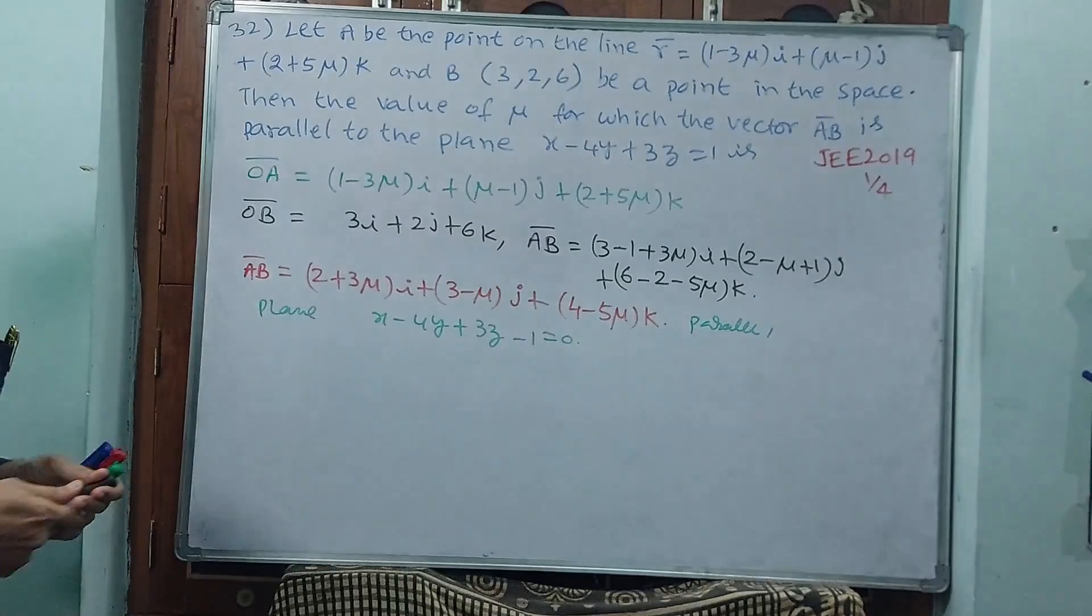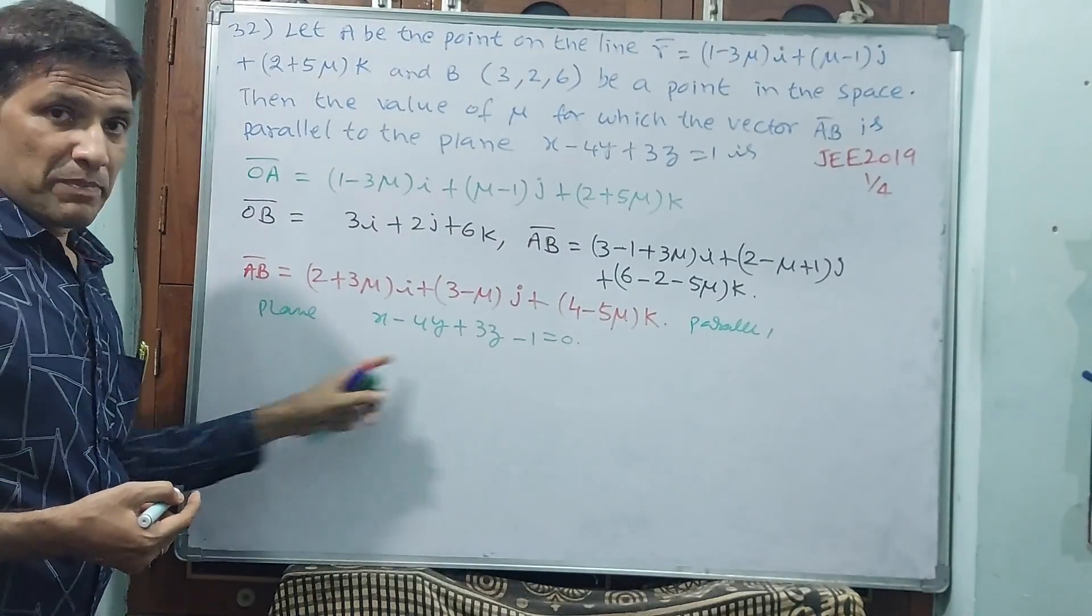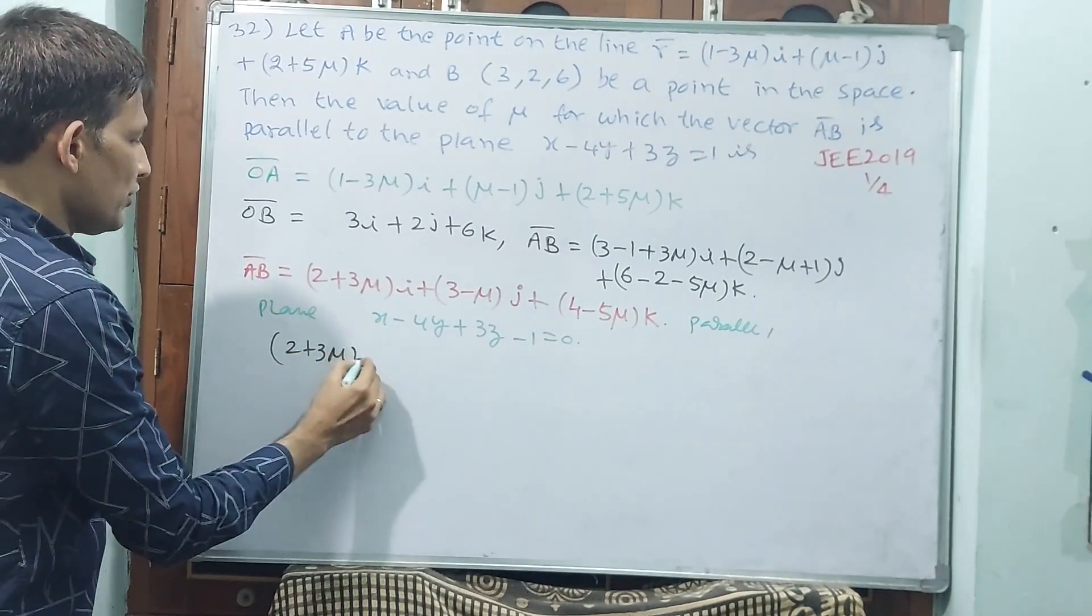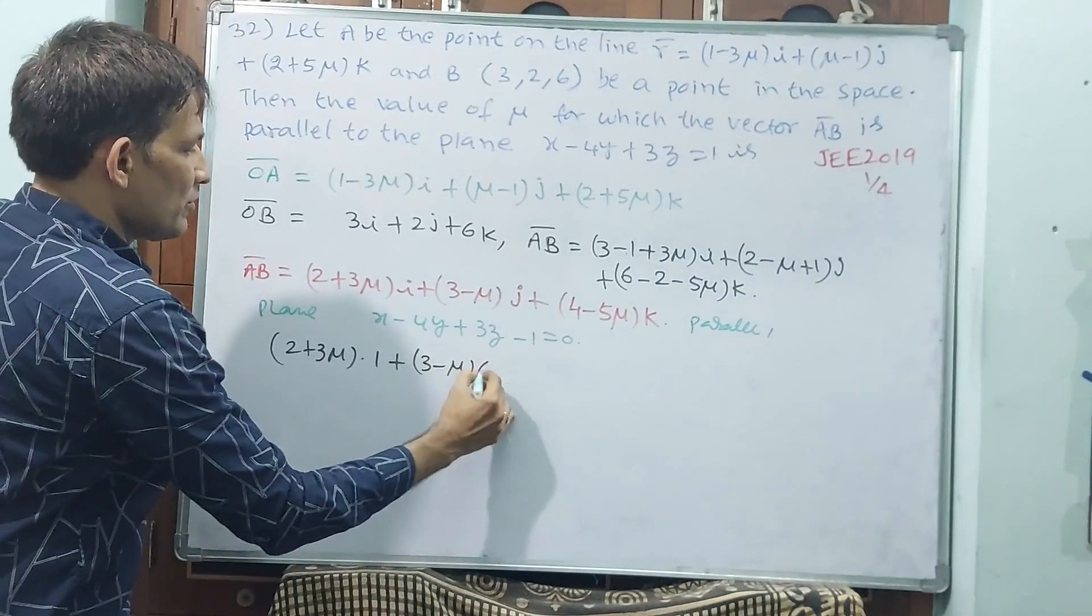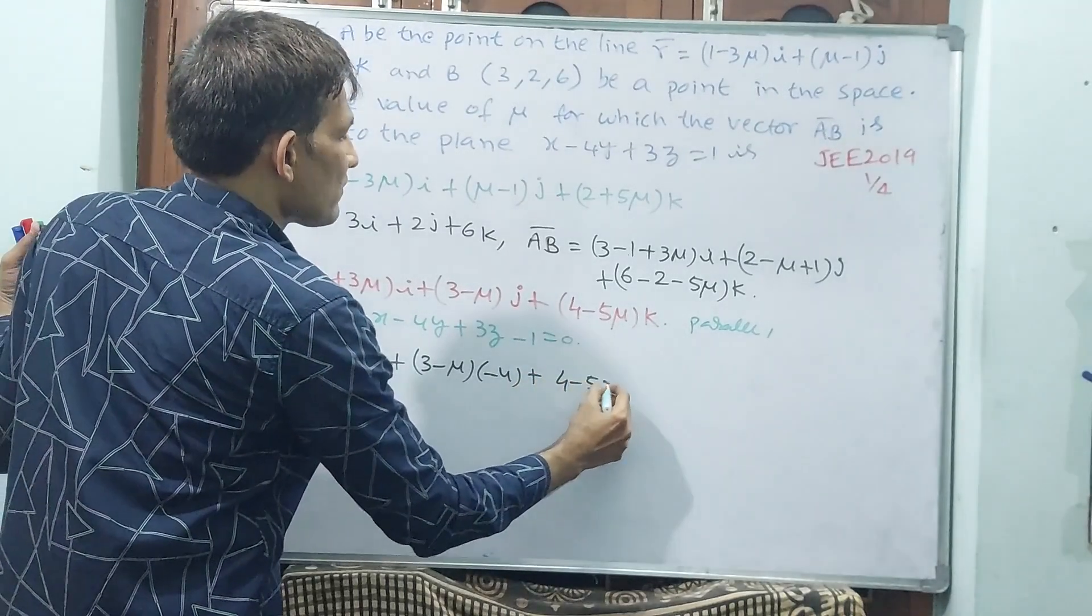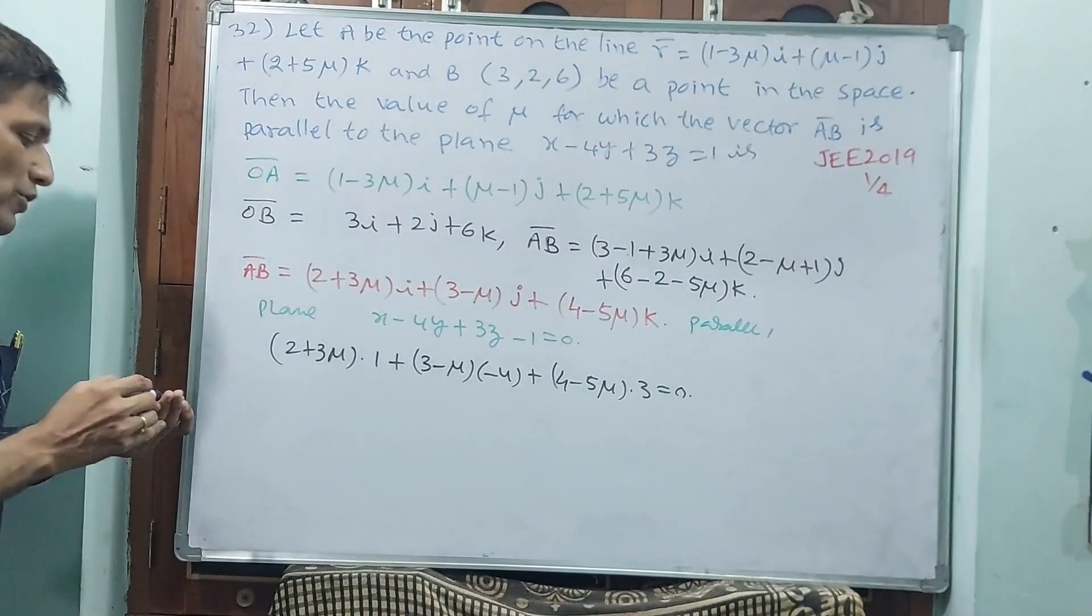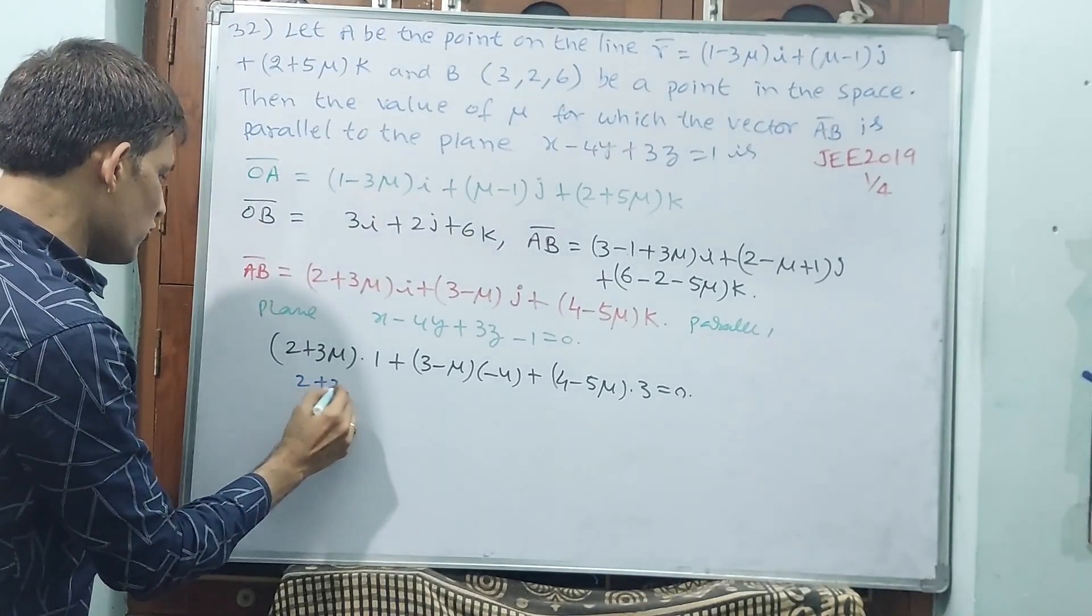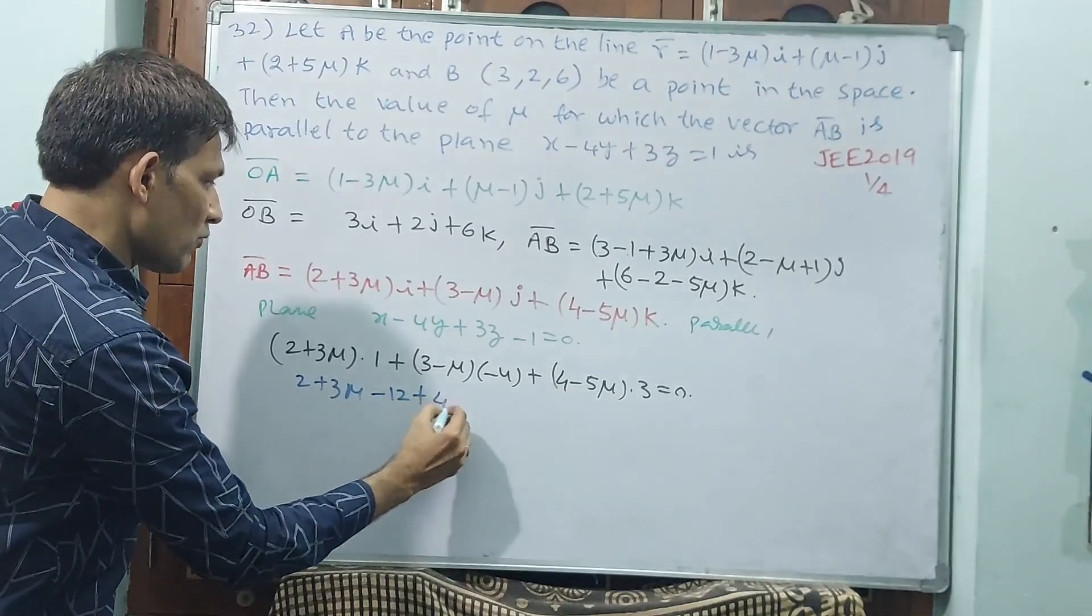This vector and this plane both are parallel, means in direction ratios I am multiplying and equating to 0. See what I must say: (2 plus 3μ) into 1, plus (3 minus μ) into minus 4, plus (4 minus 5μ) into 3.